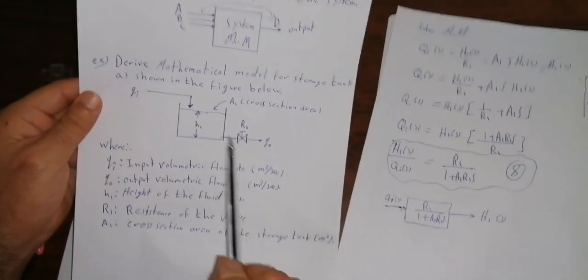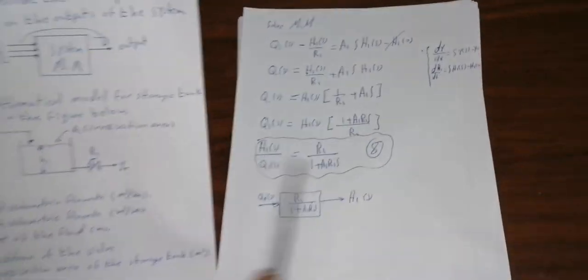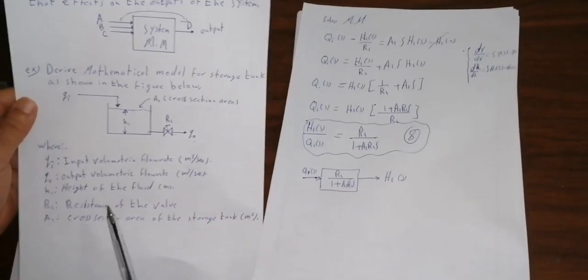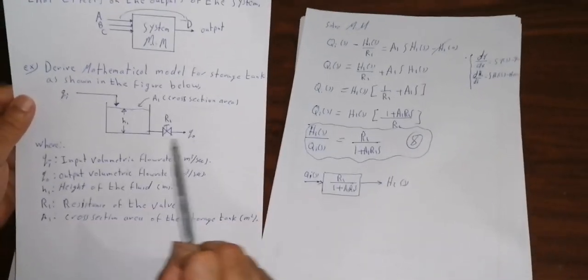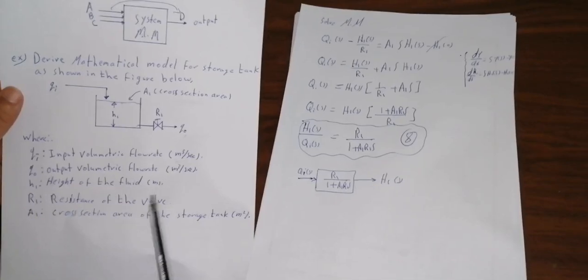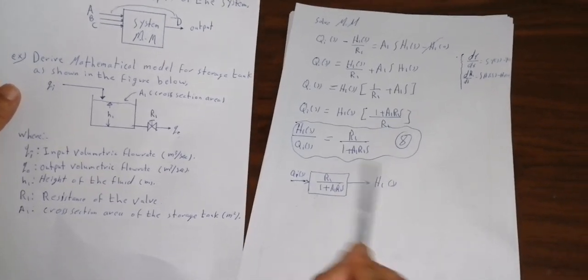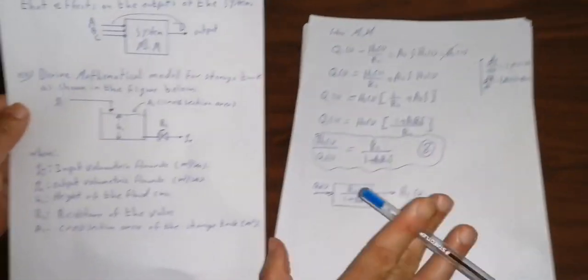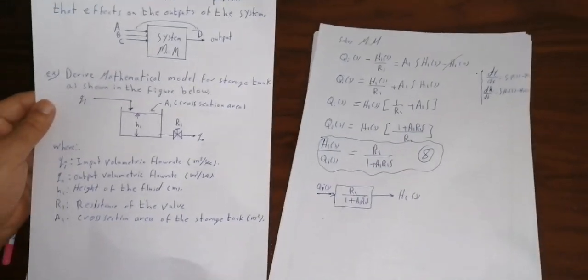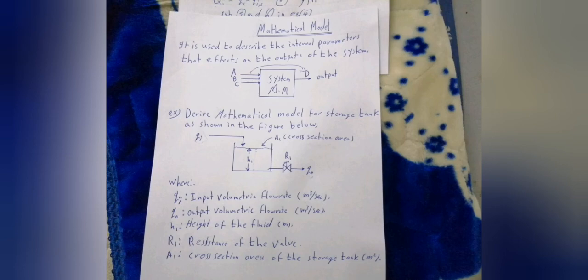We can see all the input variables of the system in this model. The output is represented by H̄1(s). This is the perfect mathematical model to describe the storage tank. Thank you very much for listening.